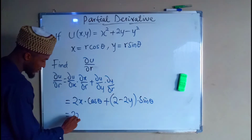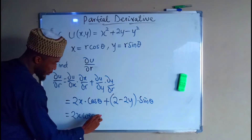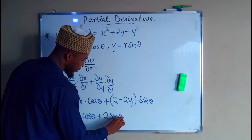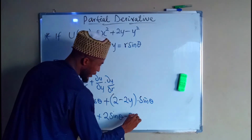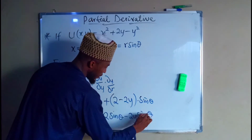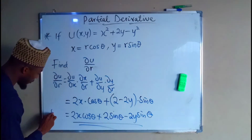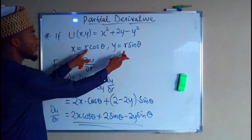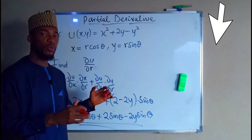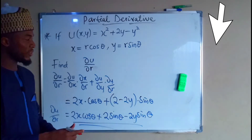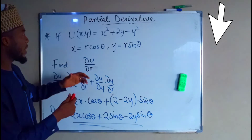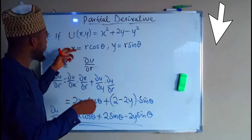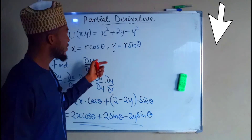So this equals 2x cos θ plus, expanding the bracket, 2 sin θ minus 2y sin θ. This is the partial derivative of u with respect to r. If you like, you can substitute for x and y in terms of r and θ, but it is not necessary because we just want to see the relationship between these functions. Another method is to first substitute for x and y, expand, then differentiate u with respect to r — you will still get the same answer.